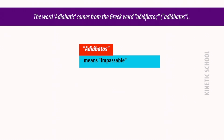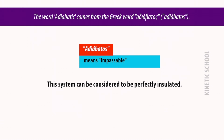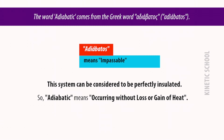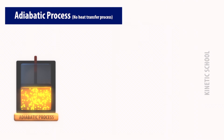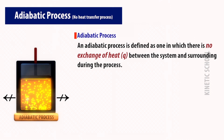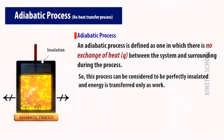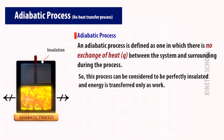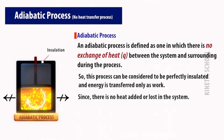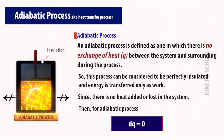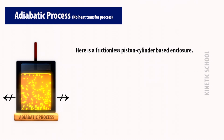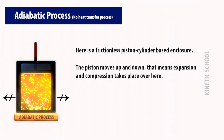The second type is the adiabatic process. The word adiabatic comes from the Greek word 'adiabatos,' which means impossible. This system can be considered to be perfectly insulated, so adiabatic means occurring without loss or gain of heat. An adiabatic process is a no-heat-transfer process. It is defined as one in which there is no exchange of heat between the system and surroundings during the process. Energy is transferred only as work. Since there is no heat added or lost, for an adiabatic process dQ is equal to zero.